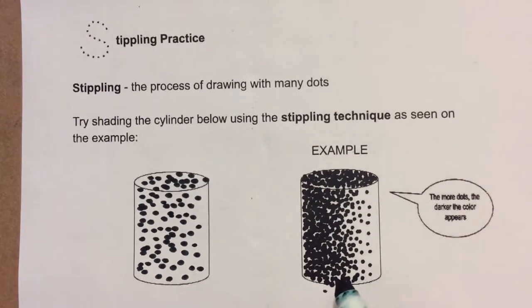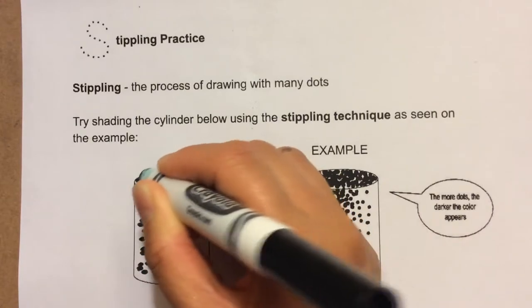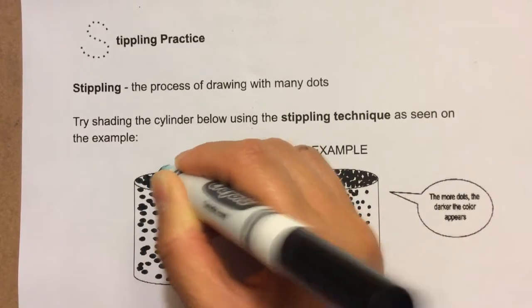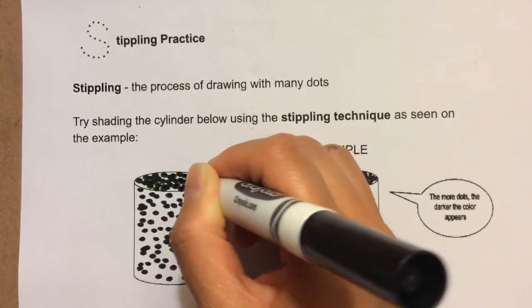And now I need to make it a little darker on the side where the cylinder is turning away from the light. Because that's where the shade is. So I'll start on the top of the cylinder here. Adding dots in between the white spaces. So that looks like a shaded area.